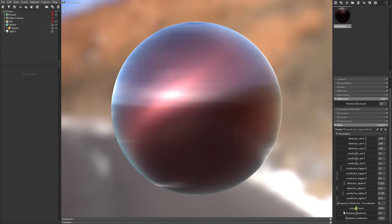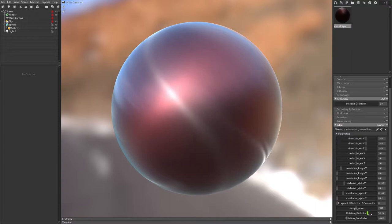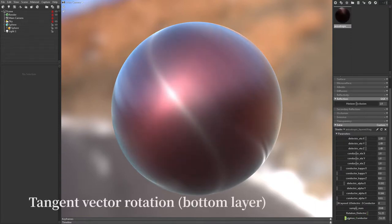Next, let us manipulate the direction of the tangent vector of each layer. Now, the tangent vector of the top layer is rotated. And the tangent vector of the bottom layer is rotated.